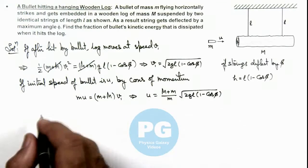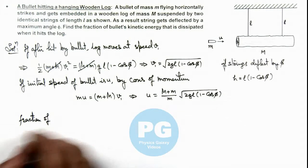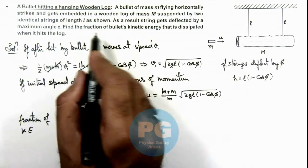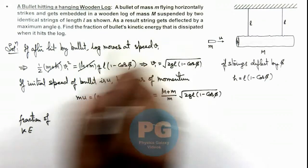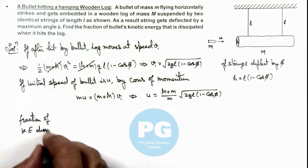So if we calculate the fraction of kinetic energy, we are required to find the fraction of kinetic energy that is dissipated when it hits the log. So the fraction of kinetic energy dissipated: